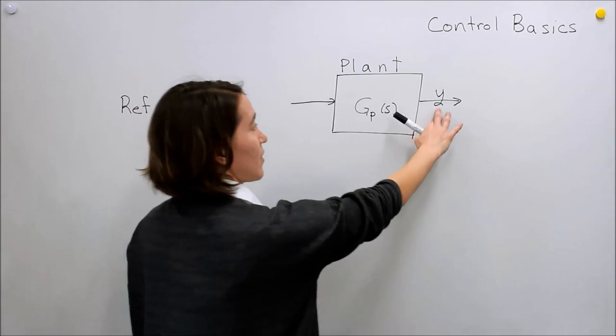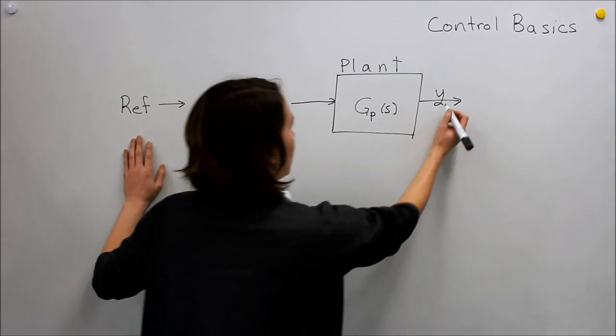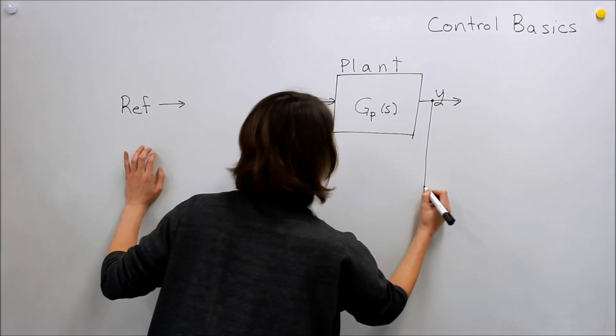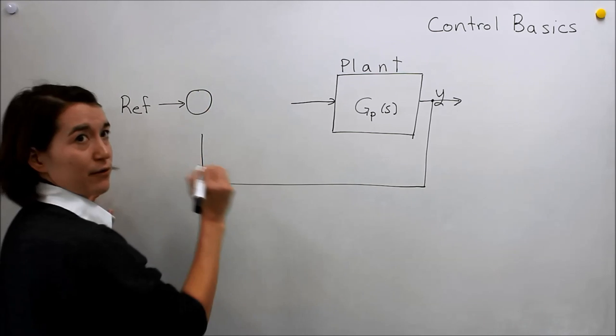But what we really want is to make sure that Y is equal to that reference. So what we want to do is look at our output and actually compare it to that reference, right? So if it's at the reference already,